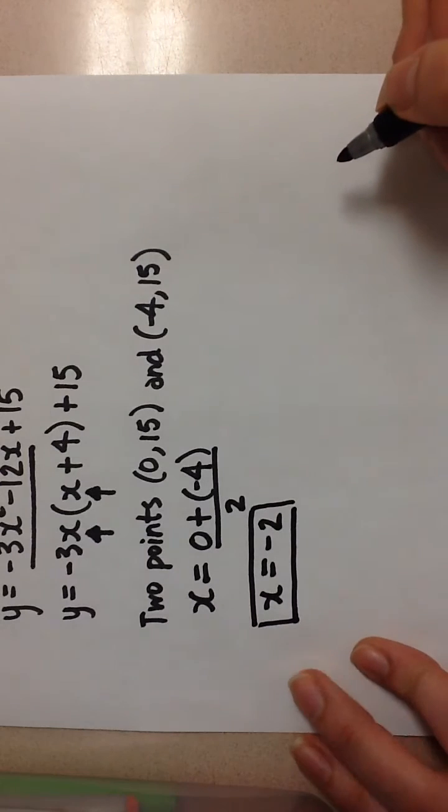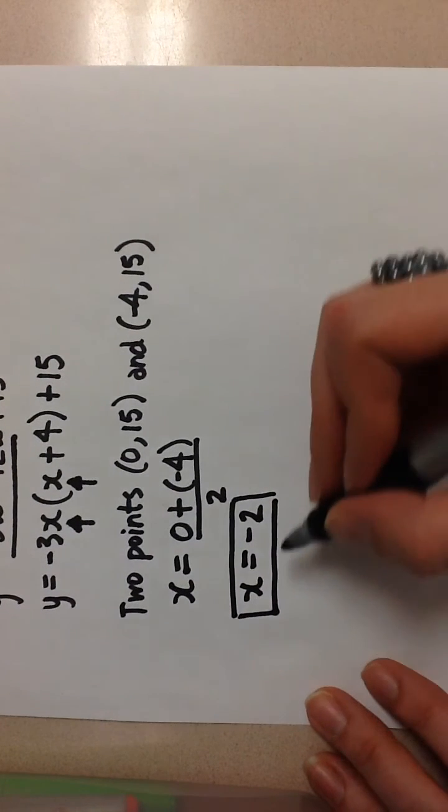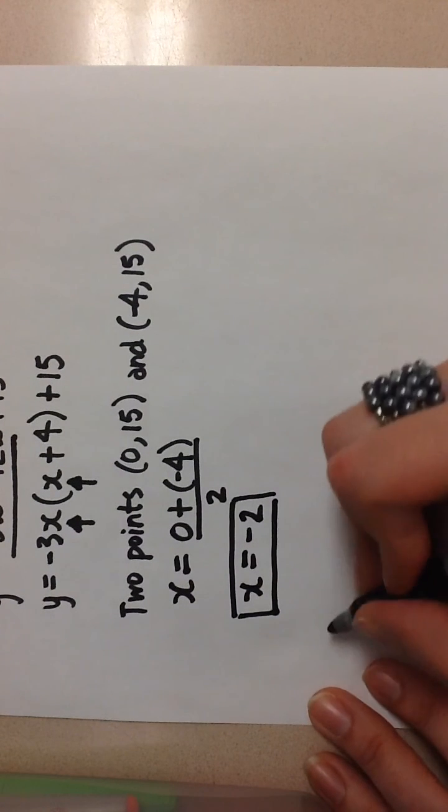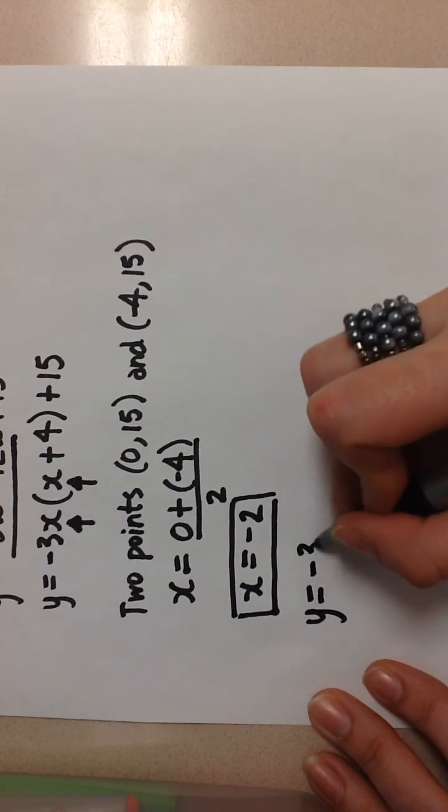I know that a maximum or minimum value occurs on the axis of symmetry for any parabola. So I'm going to take this value of x = -2 and plug it back into the original equation.